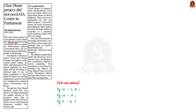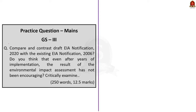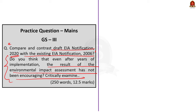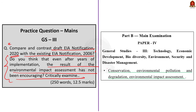Recently the Silkyara tunnel collapsed. This tunnel is being constructed under the Char Dham project. The Union Ministry for Road, Transport and Highways mentioned in parliament that there is no requirement for EIA for this project. This is the crux of the article. In this context, let us try to solve a mains question on EIA: 'Compare and contrast the draft Environmental Impact Assessment notification 2020 with the existing EIA notification 2006. Do you think that even after years of implementation, the results of the EIA have not been encouraging? Critically examine.' This question can be asked in GS Paper 3 under conservation, environmental pollution and degradation, and environmental impact assessment.